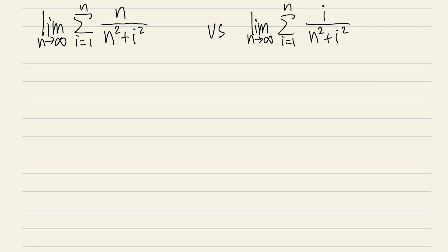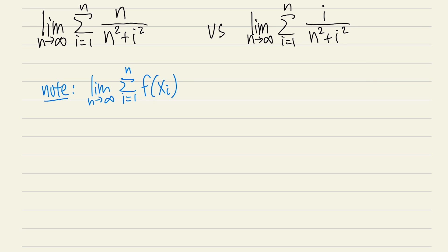Now let's get right into it. Here is the review note: whenever we have the limit as n goes to infinity of the summation — using i for the index — going from 1 to n, and we have f of x sub i, that is just the function, and x_i means we have different x values we plug in to get the height of the rectangles. So f of x is just the height of the rectangle, and Δx is the width.